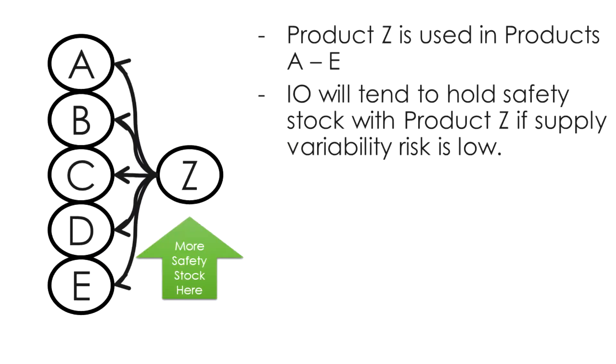As an extreme example, you have 100 different finished products that use the same single component. There's really no transportation or production lead time or variability of any of the products — maybe you're just printing a label on the box for the same pill in the same location. In that case, you'll find that the I.O. algorithm will hold almost all the inventory as the component and wait for an order before making one of the 100 finished products. This is something supply chain executives figured out how to do in the 80s, but now an I.O. system will do it automatically.